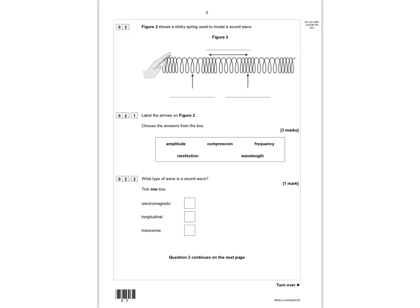Question 2 shows a slinky spring used as a model for a sound wave. You need to label the points using the labels provided. The distance between two compressions is the wavelength. Where the spring is pressed together is a compression, and where it's spread apart is a rarefaction. You get a mark for each label. You should also know that a sound wave is longitudinal.